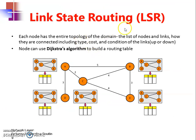Link state routing uses an algorithm to build a routing table and to find the shortest path. This algorithm is called Dijkstra's algorithm — a very important algorithm as far as problems and concepts are concerned.